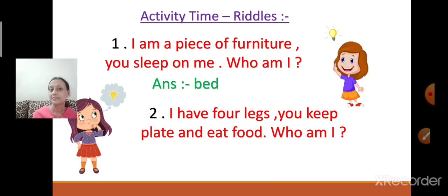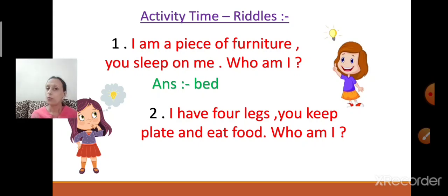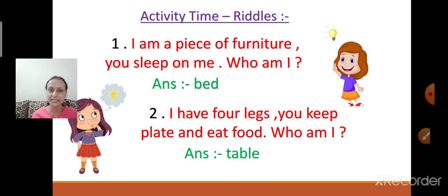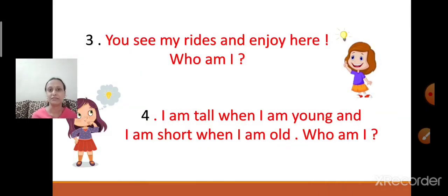Now on number two — the girl is thinking. I have four legs. You keep a plate and eat food. Who am I, children? Think. I have four legs, you keep a plate and eat food. It is a table. A table has four legs and you keep a plate — and what does that plate have? Food. And then you eat. Very good children, you are giving me the answers quickly.